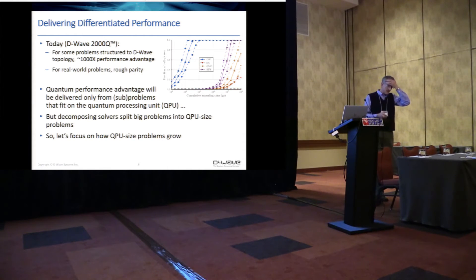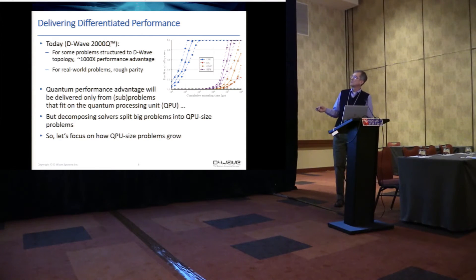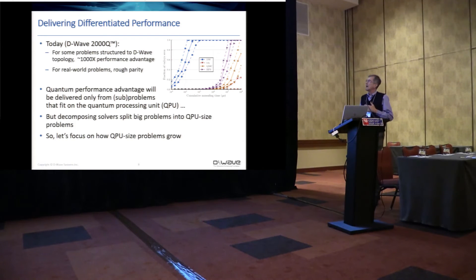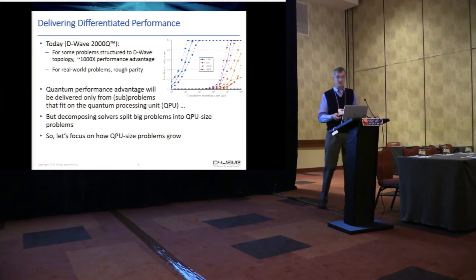So stepping back for a moment and perhaps just to state the obvious, any quantum performance advantage will be delivered only from problems or sub-problems that fit on our quantum processing unit. Don't think that means that any problem you solve has to fit on the QPU because we have decomposing solvers that split big problems into small problems. But what I want to do now is focus on how those QPU size problems grow.